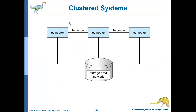This diagram explains the concept of storage area network. Here you have computer one, computer two, and computer three — these nodes are interconnected and may be separated by several kilometers, but they are still sharing the same storage. This is an example of a storage area network, which is achievable using clustered architecture.